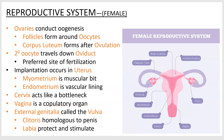Female reproductive system — again, a top-down view. Ovaries are where you conduct oogenesis. There are structures called follicles that form around the oocytes and kind of hold them as they develop. After the follicle releases the oocyte in ovulation, it becomes what's called a corpus luteum, which produces some different hormones, as we'll see.